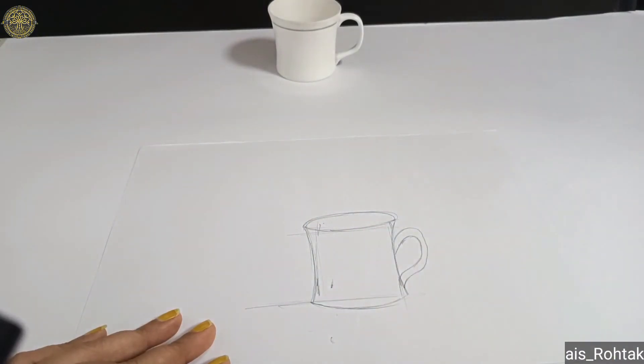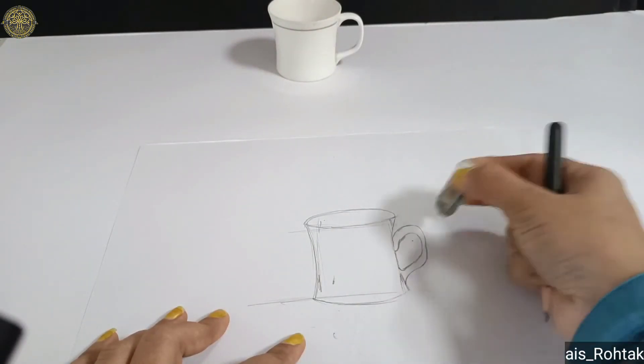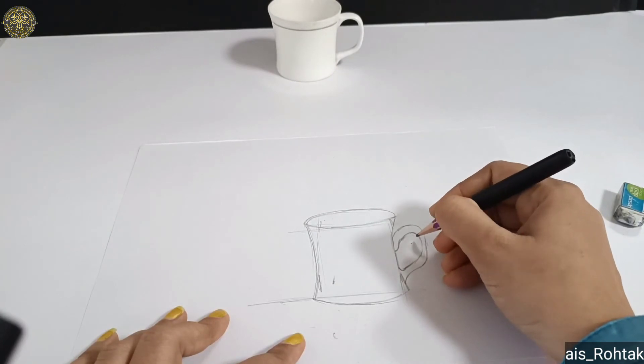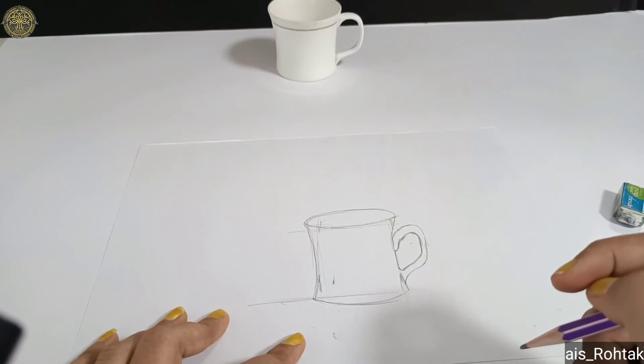Now first we have to erase all the extra pencil lines, and then we give proper curves from the edges of the cup.